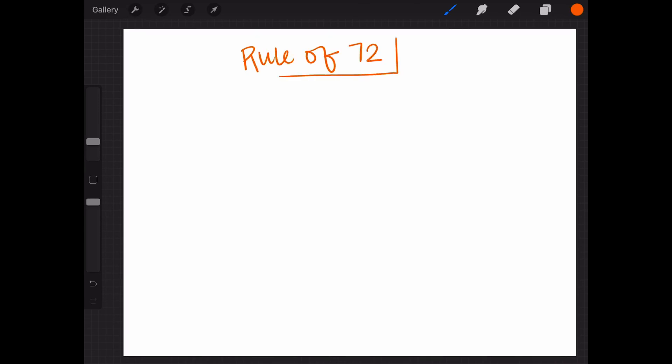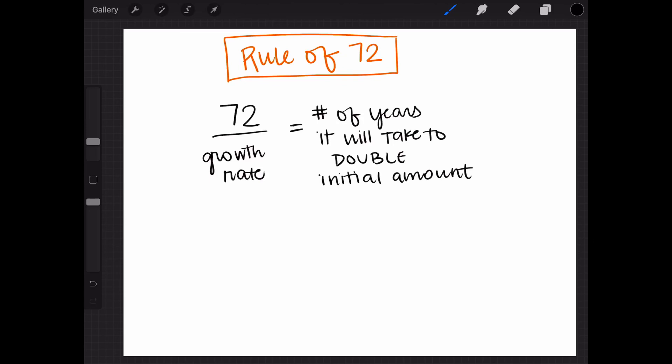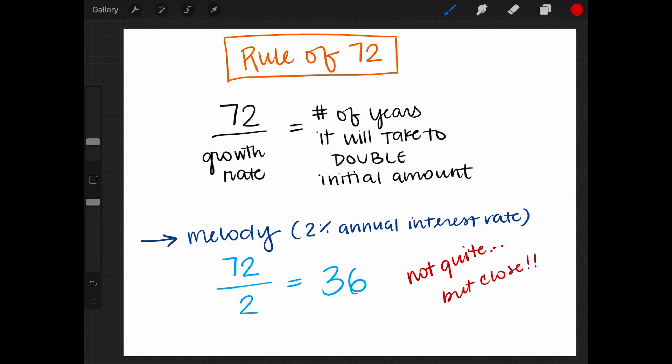If you take the number 72 and divide by the growth rate, you'll get the number of years it will take to double the initial amount. Let's try it with Melody's. 72 divided by our growth rate of 2% equals 36, which isn't exactly what we got, but actually is really, really close.